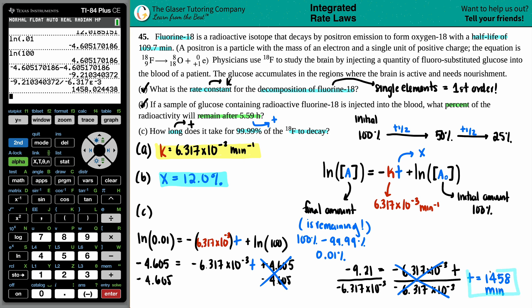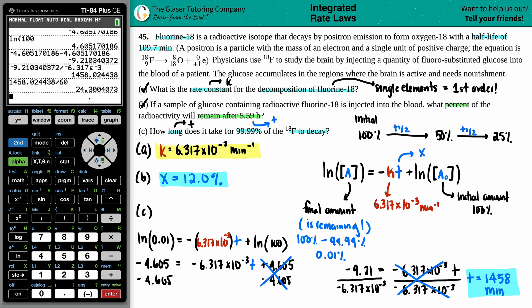So t is approximately 1,450 minutes. If we convert to hours by dividing by 60, we're looking at roughly 24 hours — about one full day for the majority of this fluorine to get out of your system. And that's it — answers for A, B, and C. Check, check, check.